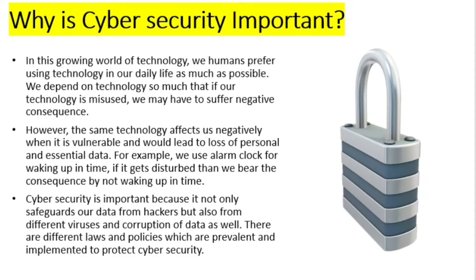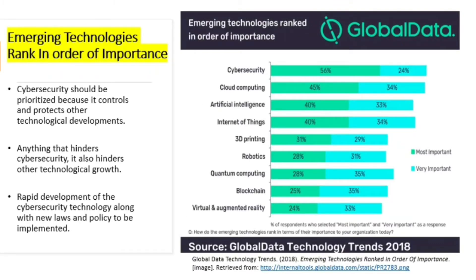For example, we use an alarm clock to wake up in time — if it gets disturbed, we bear the consequence of not waking up. Cyber security is also important because it not only safeguards our data from hackers but also from viruses and data corruption. This slide contains emerging technology ranked by importance from Global Data Technologies 2018, which shows that cyber security should be prioritized because it controls and protects other technological developments. Anything that hinders cyber security also hinders the growth of cyber technology.